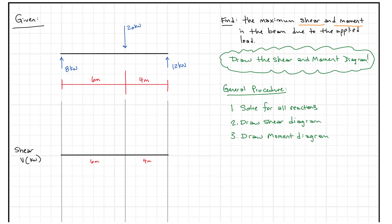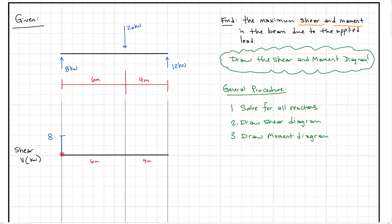To start, we take our 8 kilonewtons. If we start on the left-hand side of this beam, the shear is going to go up 8 kilonewtons. I like to draw this to scale where possible — each box here is going to be 4 kilonewtons. So I'm going to come up to 8 kilonewtons and label that on the graph.